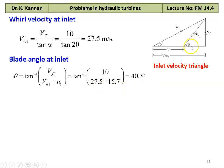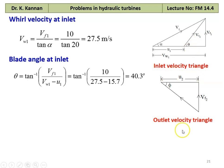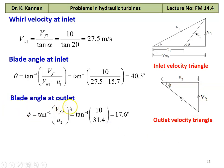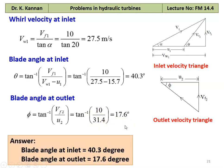Theta equal to 40.3 degrees is the rotor blade angle at the inlet. Referring to the outlet velocity triangle for radial discharge, the blade angle at the outlet, phi equal to tan inverse of Vf2 divided by U2, which is tan inverse of 10 divided by 31.4 equal to 17.6 degrees. The answer to the problem: blade angle at the inlet 40.3 degrees, blade angle at the outlet 17.6 degrees.